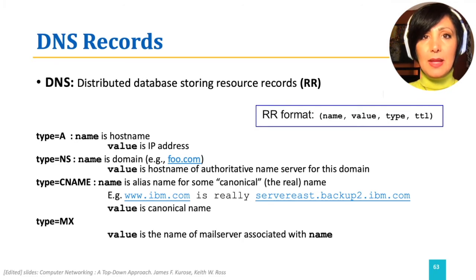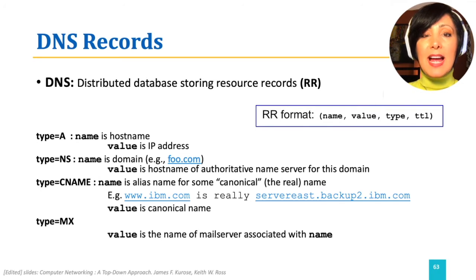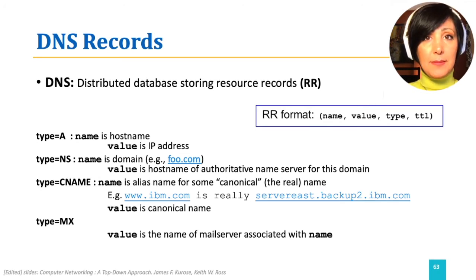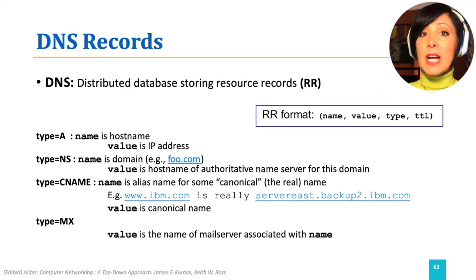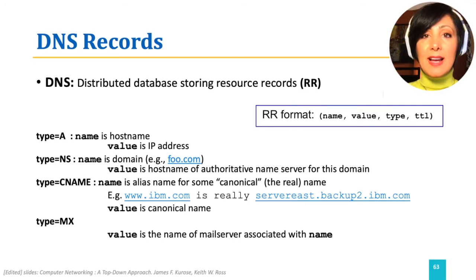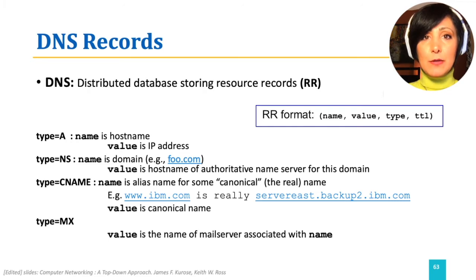If we have a type A record, the name is the hostname and value is the IP address of the hostname. If we have a type NS record, the name is the domain and the value is the hostname of the authoritative nameserver for this domain.